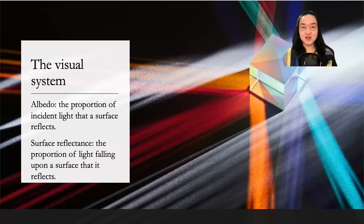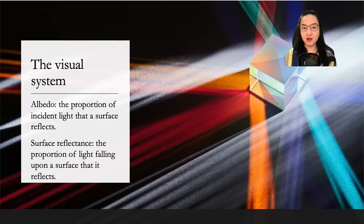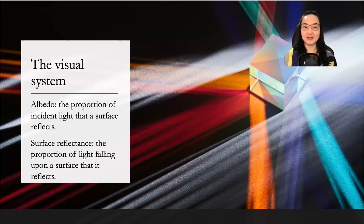The visual system — albedo. Albedo is the proportion of incident light that a surface reflects. Surface reflectance is the proportion of light falling upon a surface that it reflects.